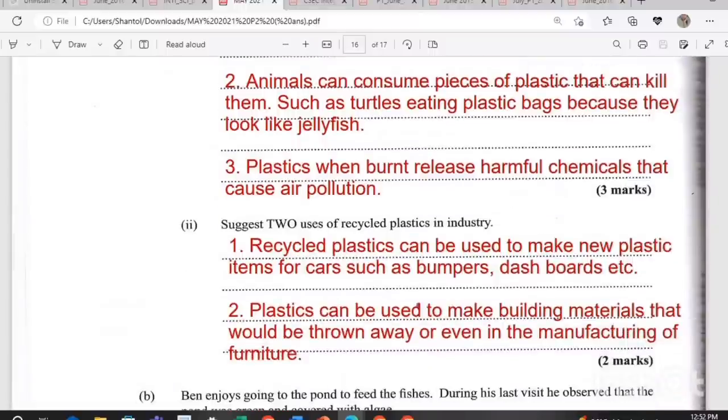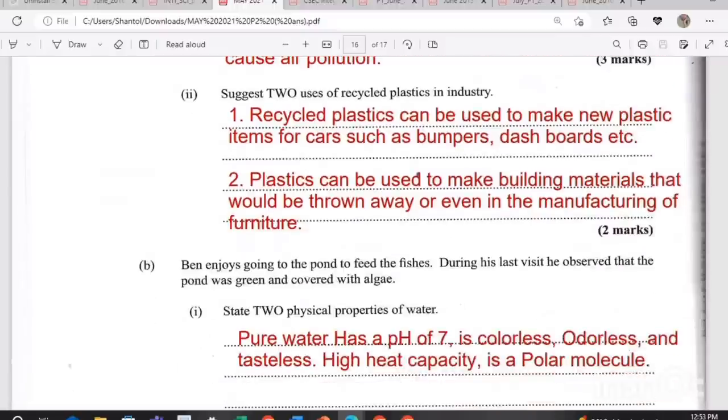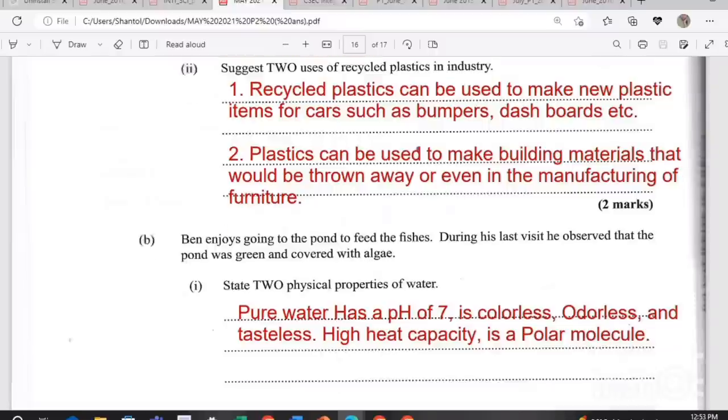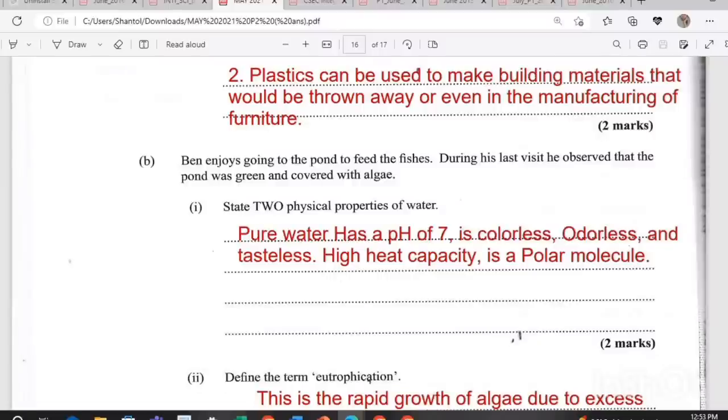Ben enjoys going to the pond to feed the fishes. During his last visit, he observed that the pond was green and covered with algae. State two physical properties of water. Pure water has pH of seven. It's colorless, odorless, tasteless. High heat capacity and it's a polar molecule. Define the term eutrophication. Eutrophication is the rapid growth of algae due to excess dissolved nutrients, usually phosphates and nitrates in water bodies, which causes a depletion of oxygen in the area in which it exists. If we have surplus of phosphates and nitrates getting in the water, then it would cause algae to just grow very fast because they get this excess nutrient. And that would lead to this overgrowth of algae, which we call eutrophication.